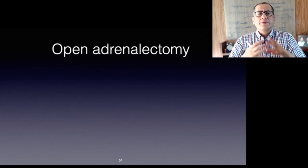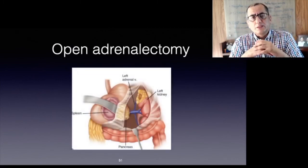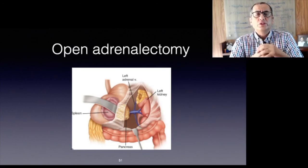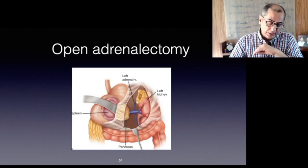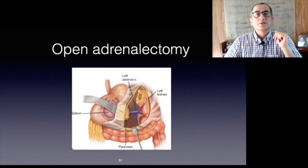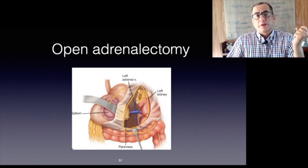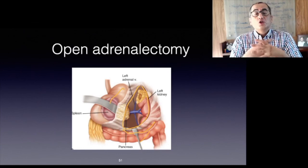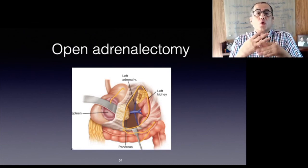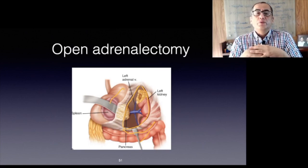On the left side, the adrenal gland can be exposed after mobilizing the splenic flexure of the colon through the transverse mesocolon or through the gastrocolic ligament. The remaining dissection is the same as in laparoscopic adrenalectomy. Resection of regional lymph nodes is performed in malignant adrenal tumors and includes resection of the tissue between the renal pedicle and the diaphragm.